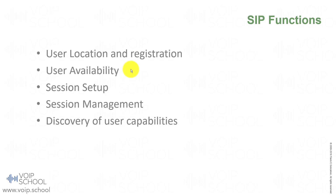The fifth function is discovery of user capabilities. During call setup, SIP allows the negotiation of user capabilities such as codecs, streams, and parameters like DTMF in the SIP negotiations. It uses the Session Description Protocol (SDP) for this purpose.